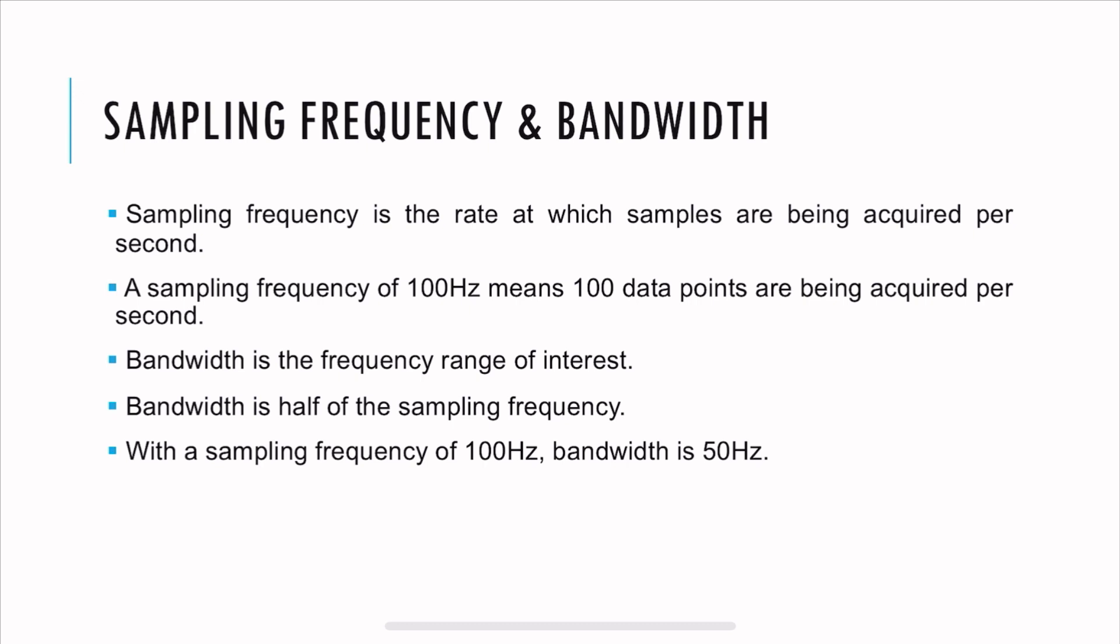The next term is bandwidth. Bandwidth is a frequency range of interest. It is half of the sampling frequency. So in our example, if the sampling frequency is 100 Hz, the bandwidth is 50 Hz.